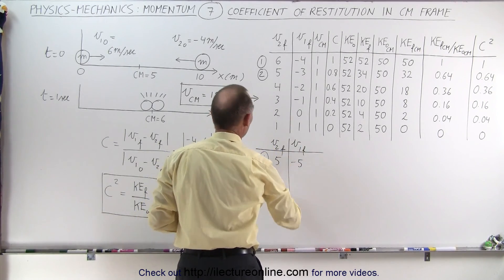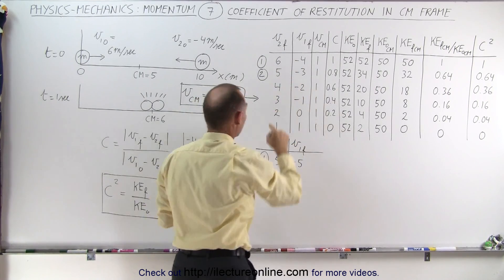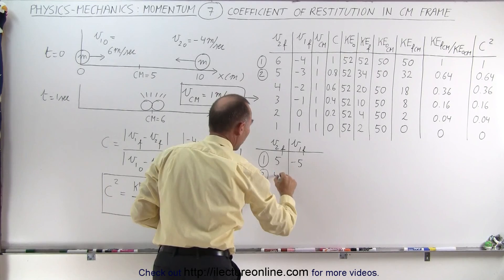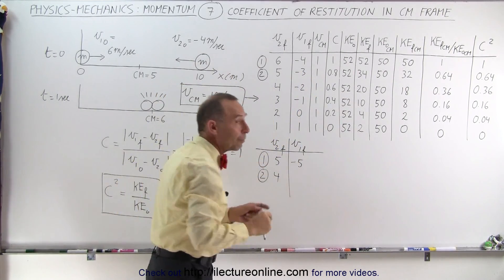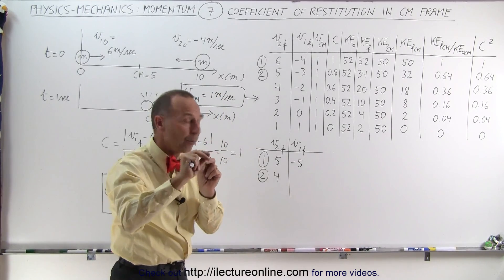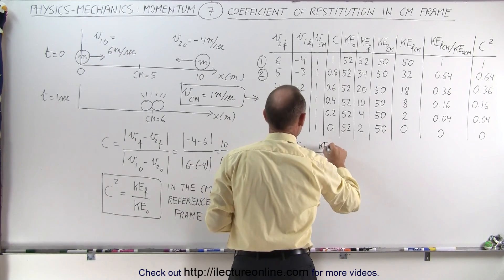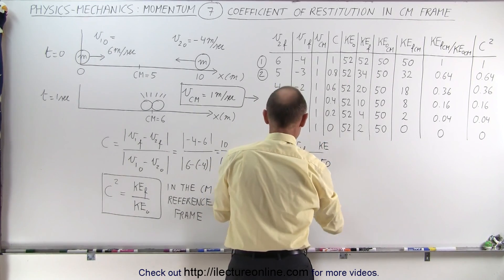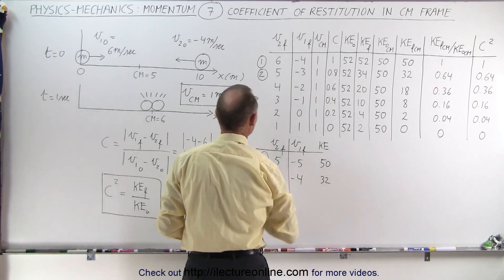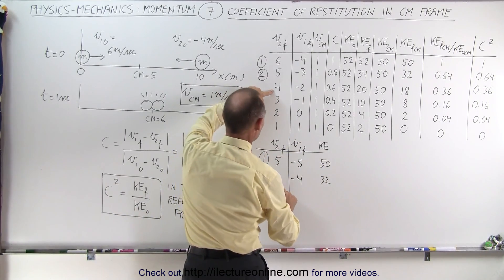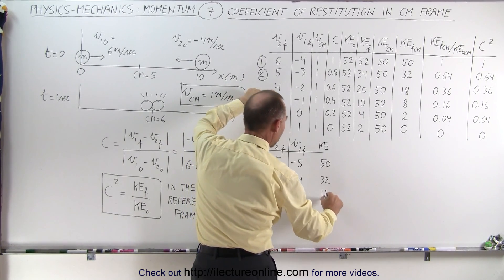For case number two, V2 is moving to the right at 5 m/s relative to the center of mass, but it's only 4 m/s, and V1 final is moving to the left at 3 m/s — but relative to something moving to the right at 1 m/s, it's minus 4. So the kinetic energies in this case are 16 plus 16, which is 32. In case number three, the final velocities are 3 and minus 3, giving 18 when squared and summed.